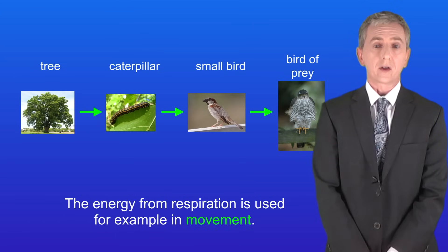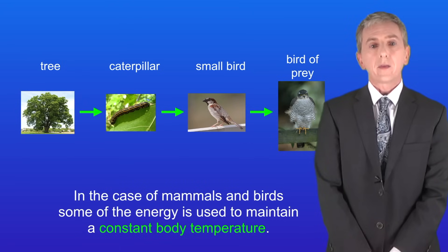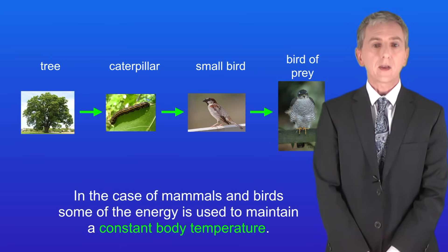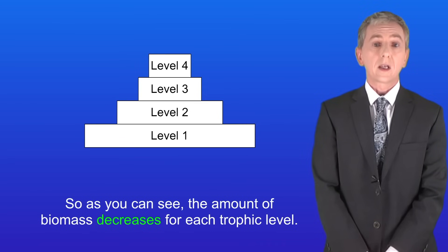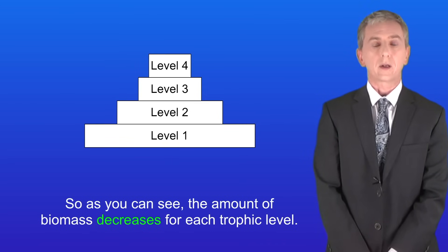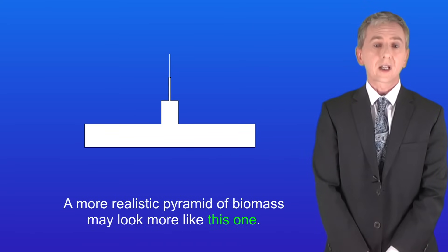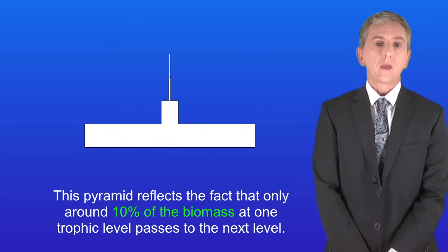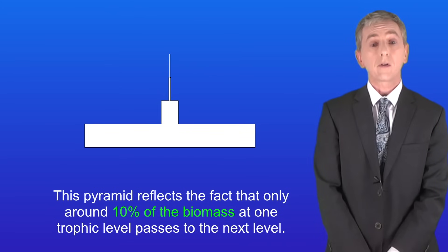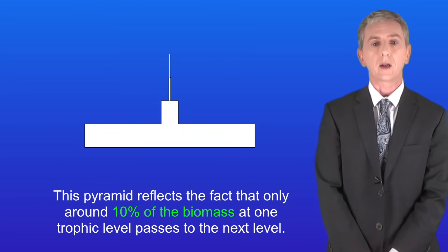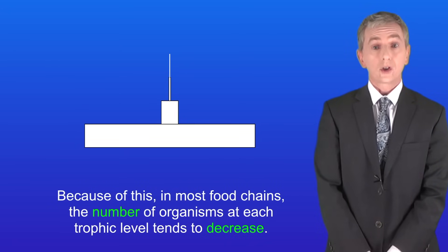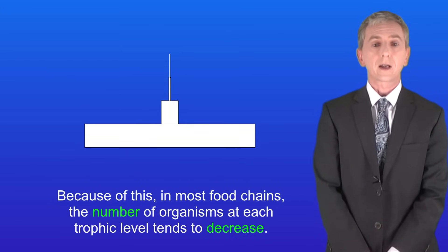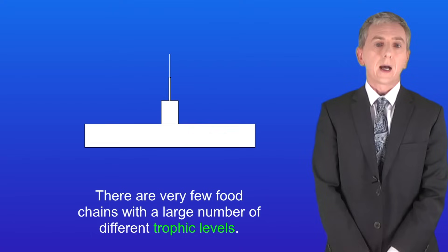The energy from respiration is used for example in movement. In the case of mammals and birds, some of the energy is also used to maintain a constant body temperature. So as you can see, the amount of biomass decreases at each trophic level. In fact, a more realistic pyramid of biomass may look more like this one. This pyramid reflects the fact that only around 10 percent of the biomass at one trophic level passes to the next. Because of this, in most food chains the number of organisms at each trophic level tends to decrease, and there are very few food chains with a large number of different trophic levels.